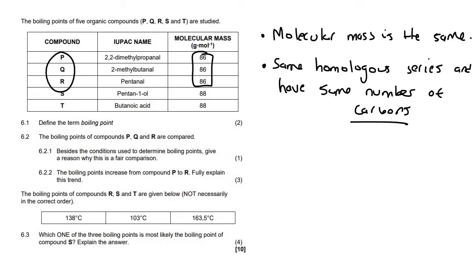6.2.2. The boiling point increases from P to R. Fully explain this trend. So they tell us that the boiling point increases. So it gets larger from P to R. Now, the reason for this will be explained by first drawing these out quickly. So I'm going to draw this first one out. So that's propanil.